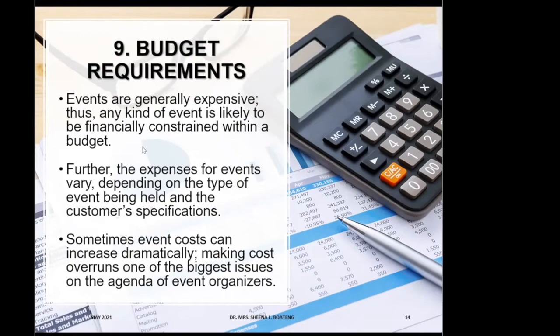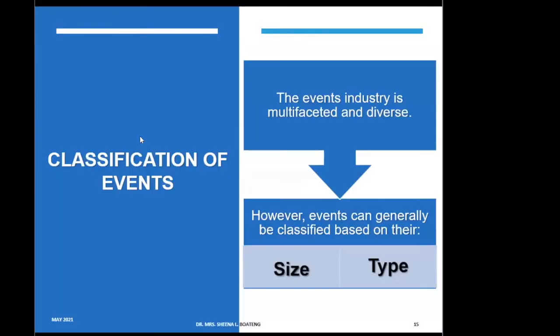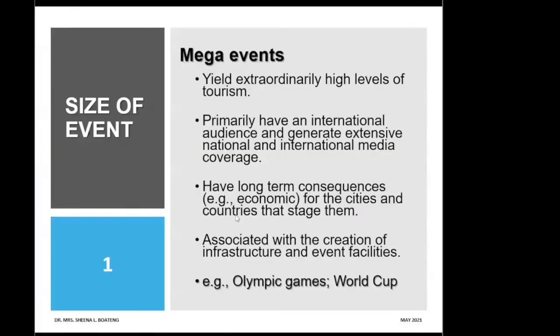We've now come to the end of the characteristics of events. Now let's talk about the classification of events. We know that events in any industry are multifaceted. Relating it to hospitality and tourism, we can discuss various events organized from time to time. To properly classify these events for planning and understanding, we can categorize them into two main classes based on their size and their type.